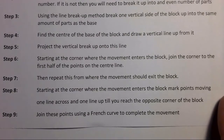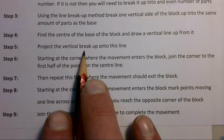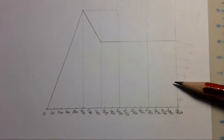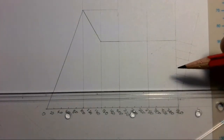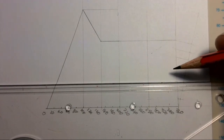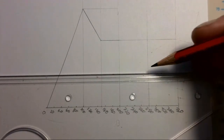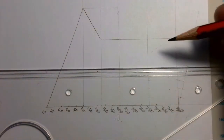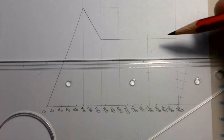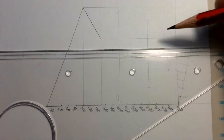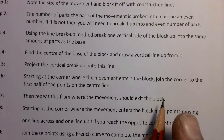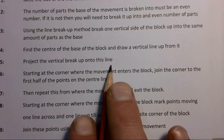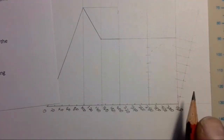Step five: project the vertical breakup onto the center line. We take our vertical breakup and project it onto that line, making a small dash wherever the vertical breakup hits the center line. We mark each of those points. Step five is done — we've projected the vertical breakup onto the center line and across.